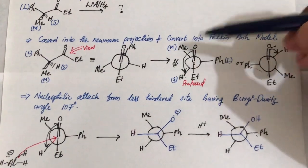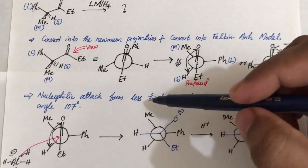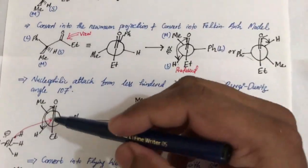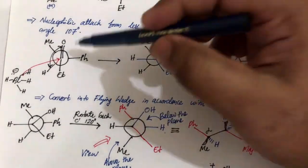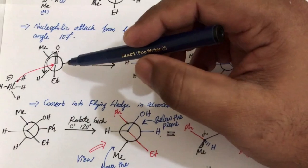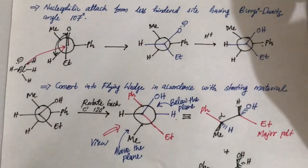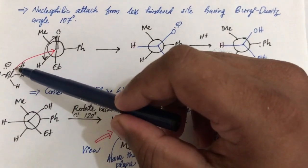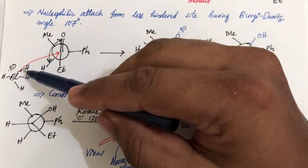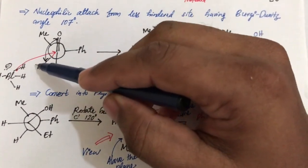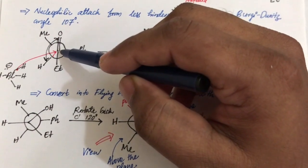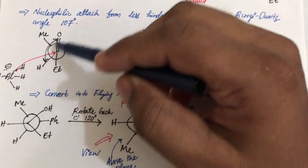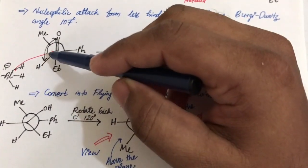This is the preferred conformation. The nucleophilic attack occurs from the less hindered side with a Bürgi-Dunitz angle of 107°. Lithium aluminum hydride furnishes H⁻ as the nucleophile, which approaches the carbonyl center through the side where the smallest group at alpha carbon gives the 107° bond angle.